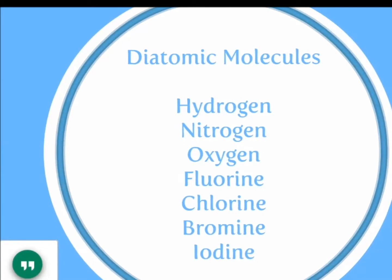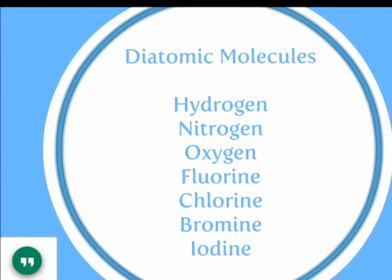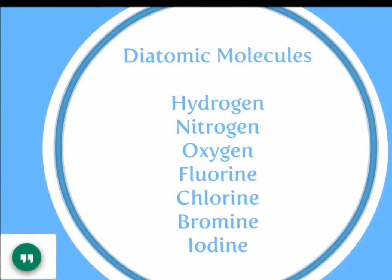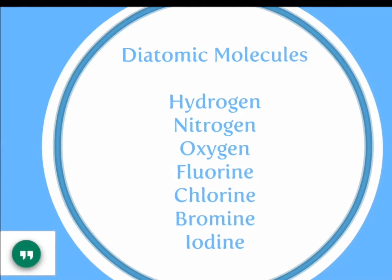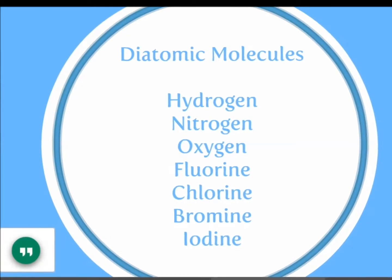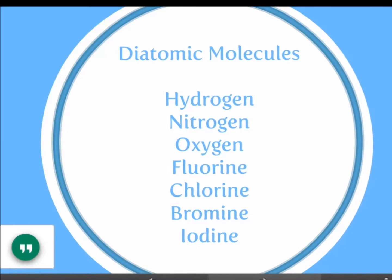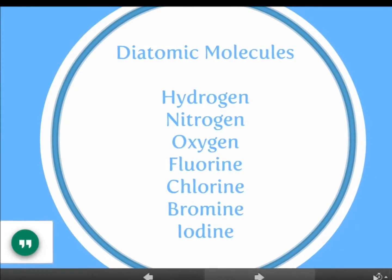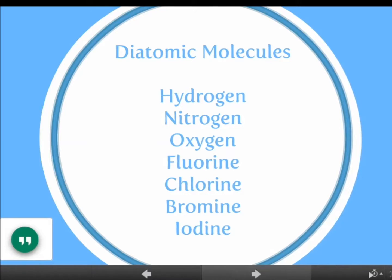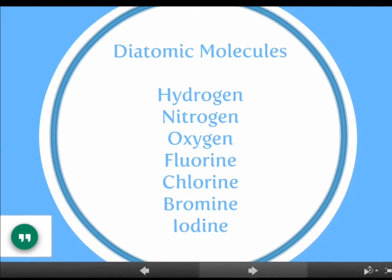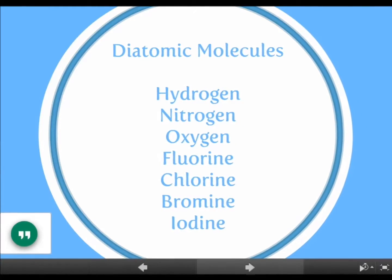So you have hydrogen by itself, and then the rest of them are going to create a little seven on the periodic table starting with nitrogen, going over to oxygen, over to fluorine, and then down all the way to iodine. It just creates a little seven right there. That's how I remember it.